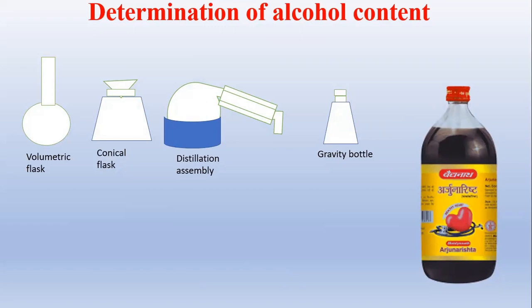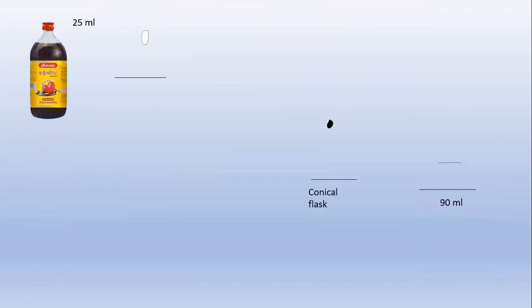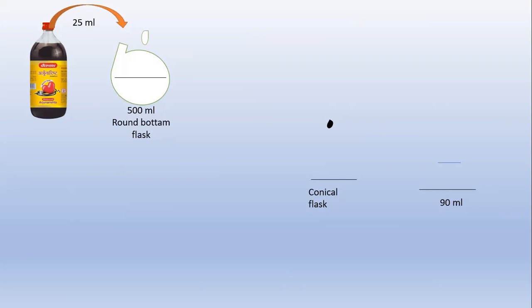Now let's start. First we take the Arjuna Arista bottle. To the round-bottom flask, which is a part of the distillation assembly, we add 25 ml of the preparation — that is Arjuna Arista. Then we add water up to 150 ml to this mixture.